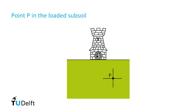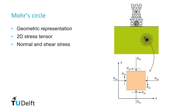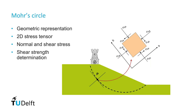We consider a point P in the loaded subsoil, as shown in the figure. The Mohr's circle is a geometric representation of the 2D stress tensor at point P. It is a very useful tool to determine the normal and shear stresses acting on different planes through point P, as well as to graphically represent the orientation of those planes. All stress conditions in a soil sample can be found on the Mohr's circle, with their corresponding shear and effective or total stress. An example would be the failure mechanism of a dike through point P — we have to determine the 2D stress tensor at point P, compare it to the ultimate shear strength properties of the soil, and determine whether the dike is going to fail and if reinforcements are needed.